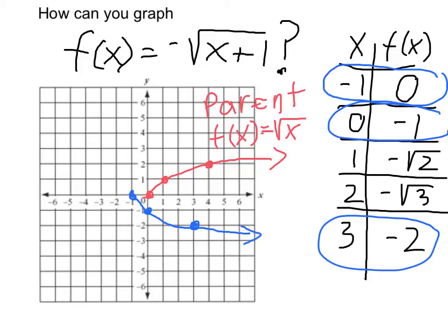Then the other thing that happens is related to this negative out here. You'll notice when I made all these calculations at the last second I had to make them negative because there was a negative out here, which has the effect of flipping it over the x-axis. So the plus 1 inside had the effect of sliding it back. The negative flipped it over the axis.